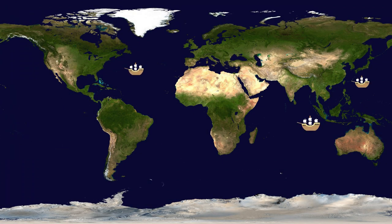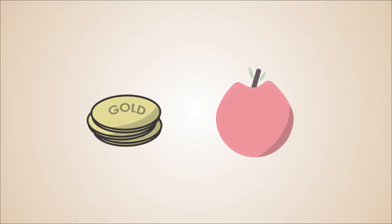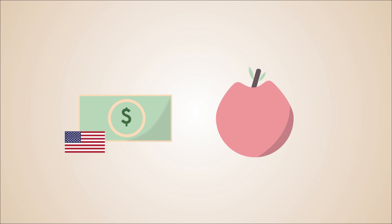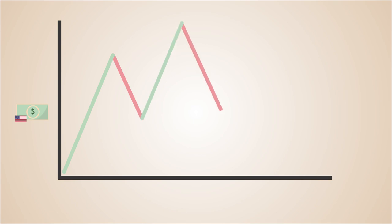The Gold Standard allowed the world trade market to expand rapidly. Where countries used to complete transactions with huge amounts of gold, they could now exchange currencies backed by the government. However, this system was faced with extreme volatility, as currency values would drop whenever miners would find new gold deposits.